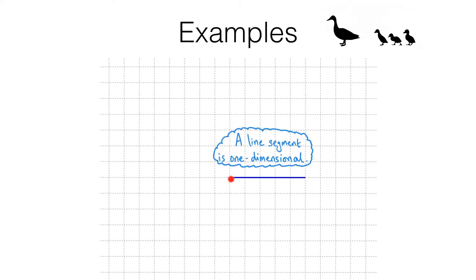I can measure its length. In this case I've drawn it on a grid where the squares have side length of one centimetre. So we can see that this line segment is five centimetres long.